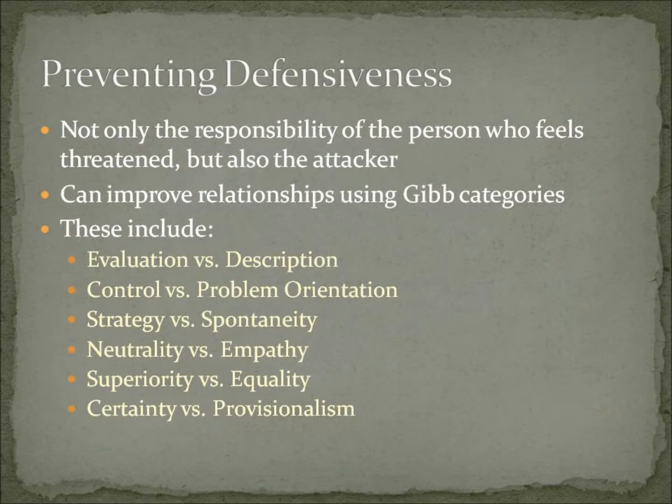Preventing defensiveness is not only the responsibility of the person who feels threatened, but also of the attacker. It can improve relationships using five categories: evaluation versus description, control versus problem orientation, strategy versus spontaneity, neutrality versus empathy, superiority versus equality, and certainty versus provisionalism.